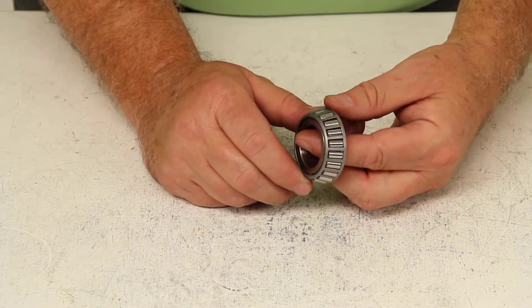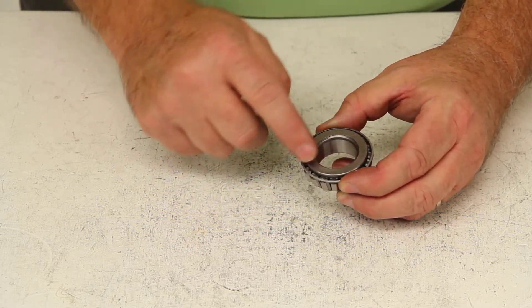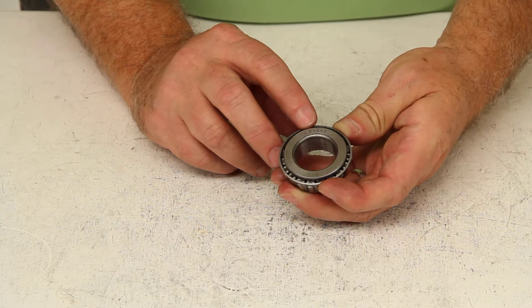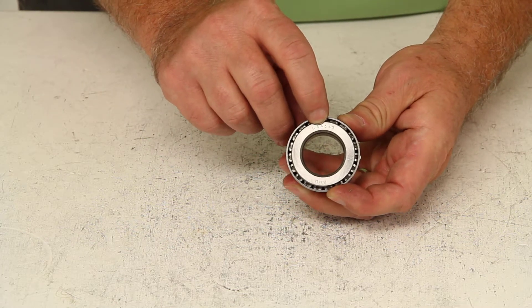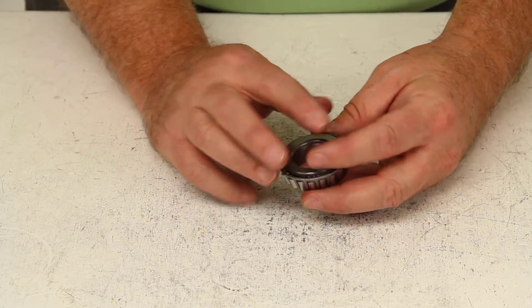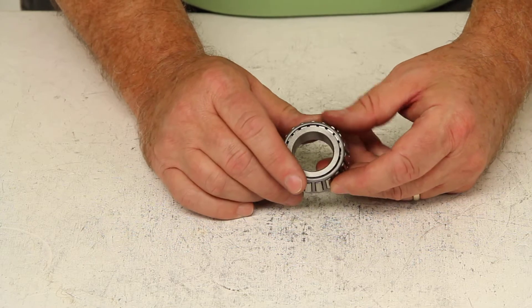To get the correct wheel bearing for your spindle, look on the inner ring of the bearing. The number would be stamped, like in this case it's stamped L44643. If you get the number off your bearing and give it to us, we can cross reference it and get you the correct size bearing.